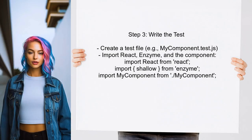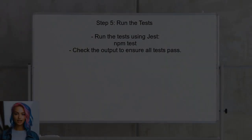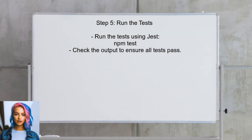Now you can write a test for the ShouldComponentUpdate method. Create a test file for your component and import the necessary libraries. In the test, create an instance of the component and change its props or state. You can then assert whether the component re-renders or not based on the ShouldComponentUpdate logic. Finally, run your tests using the Jest command in the terminal to verify that the method behaves as expected.